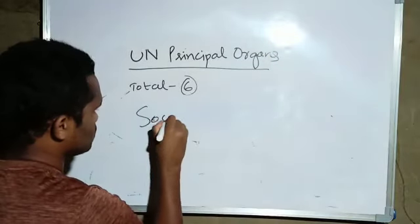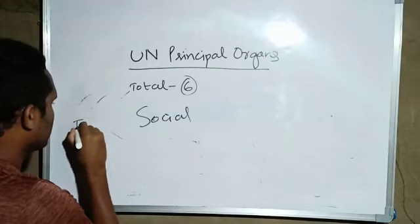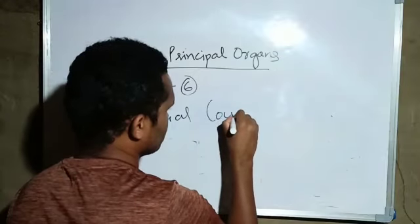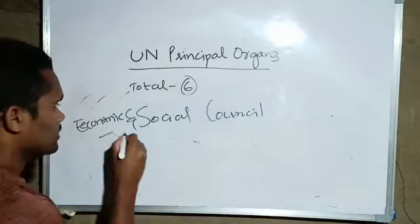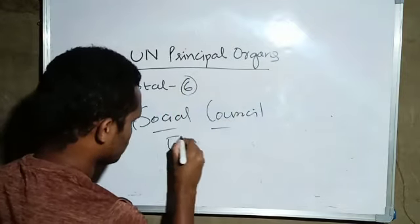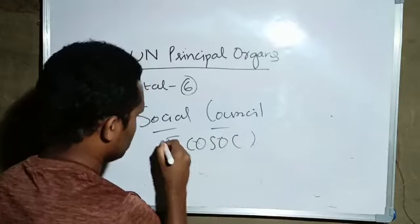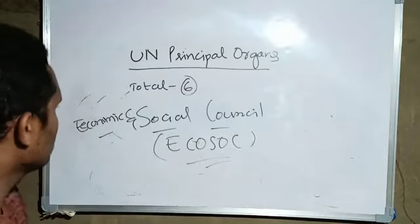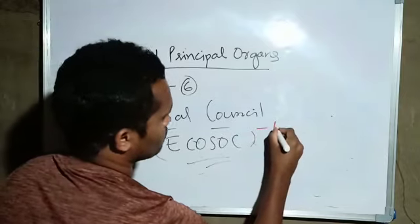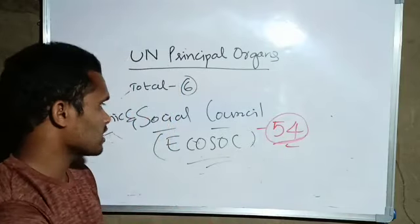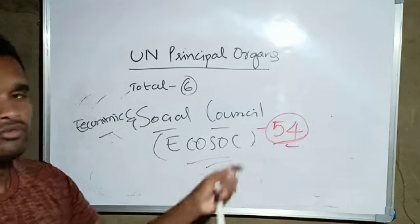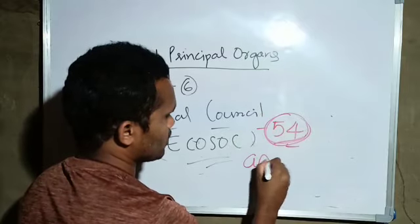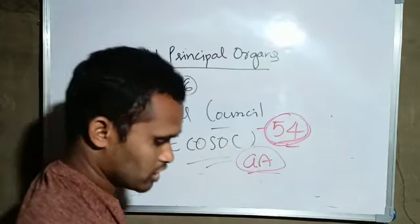Next one is Economic and Social Council. Our country has 54 members in the Economic and Social Council - 54 countries elected by the General Assembly.